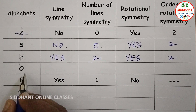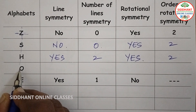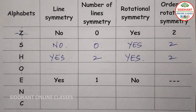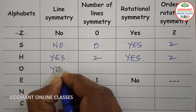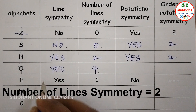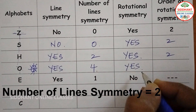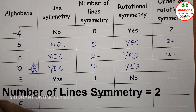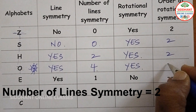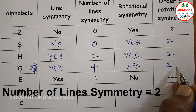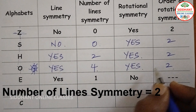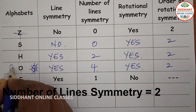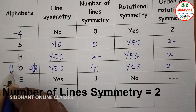Letter O. Here we get 4 lines of symmetry: vertically, horizontally, diagonal 1, and diagonal 2. So it is Yes with 4 lines. For rotational symmetry, it is also Yes. Note that if it were a circle you would get infinite rotations, but the letter O in English is written differently from a perfect circle, so the order of rotational symmetry is 2.